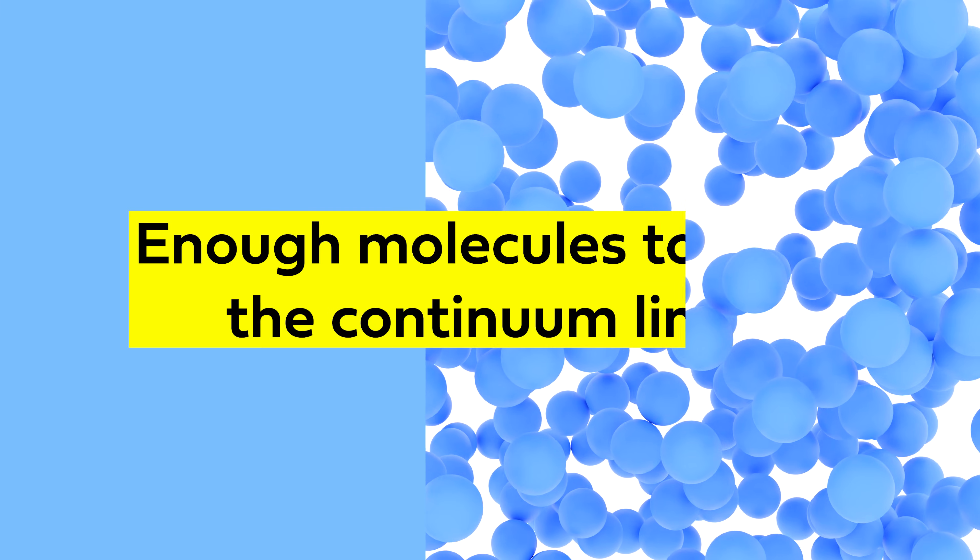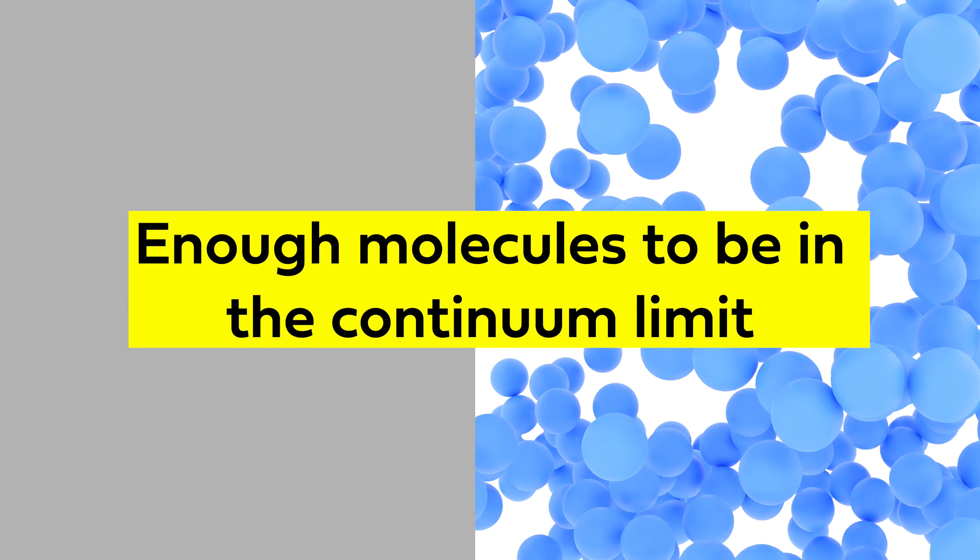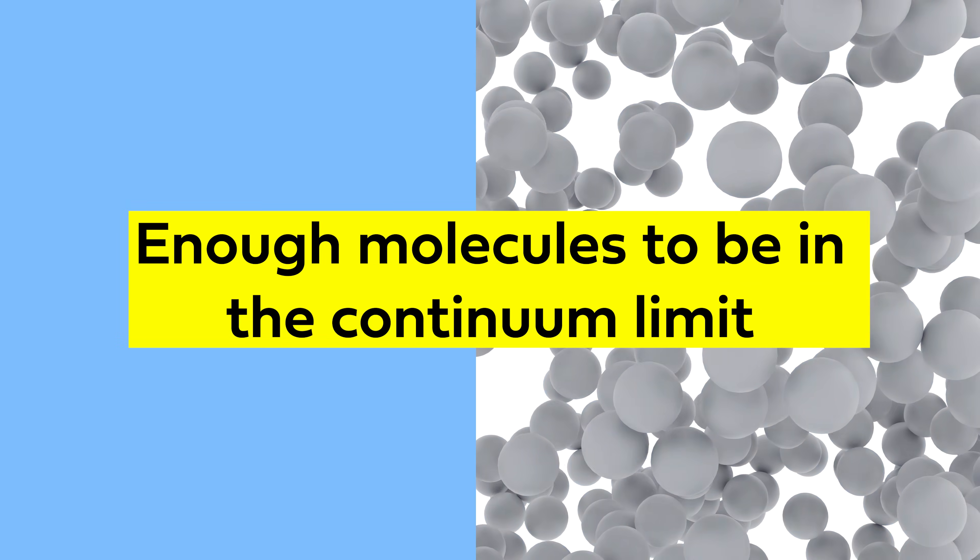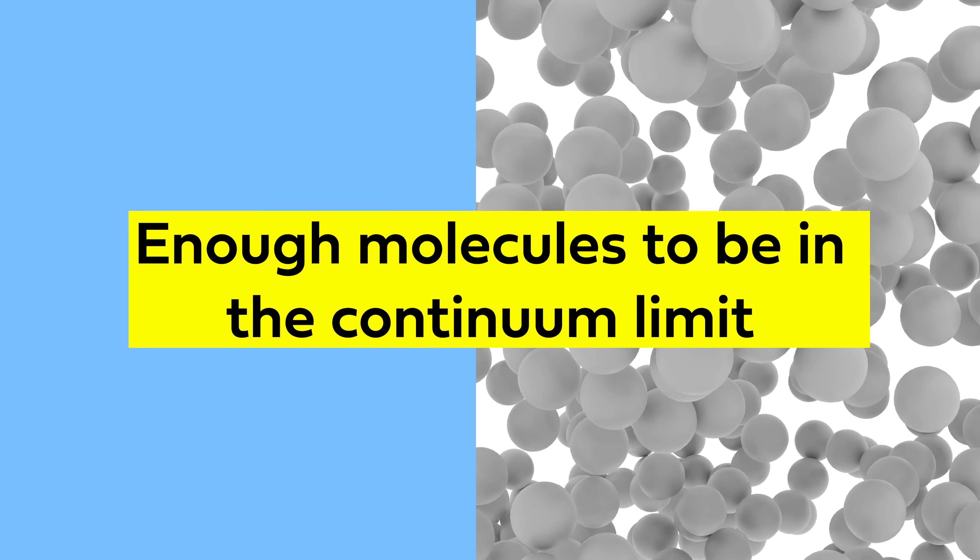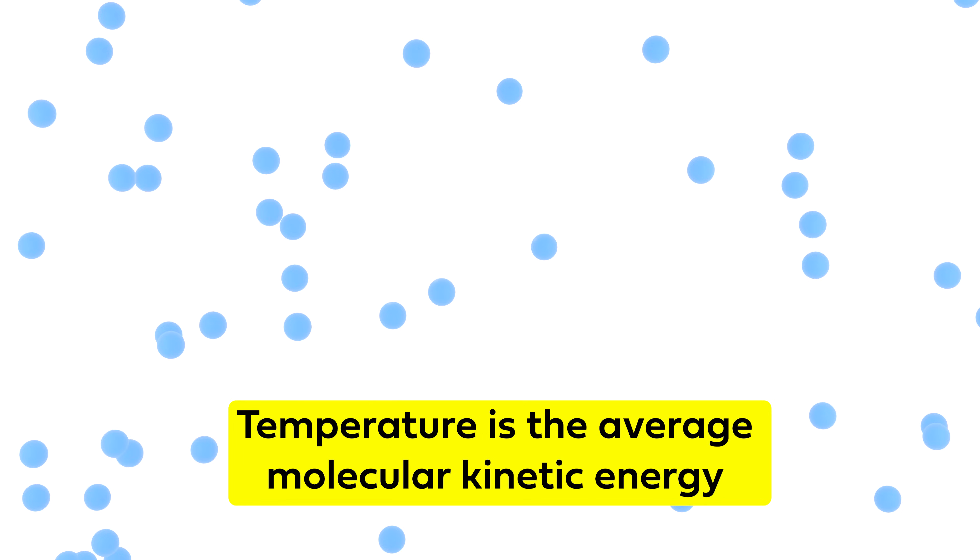The important thing is that a fluid element has enough molecules in it to be in the continuum limit. What that means is that instead of considering a bunch of individual molecules, we can average what they're doing in a meaningful way. For example, every molecule has a certain kinetic energy. We say that the temperature of an object is the average kinetic energy of a molecule in that object. But that average doesn't mean much if there are, say, three molecules.